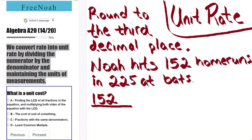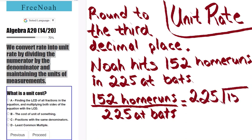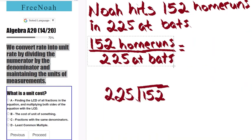We have Noah hits 152 home runs and 225 at-bats. The rate will be 152 home runs in the numerator and 225 at-bats in the denominator. So we have here a rate. Now, let's convert this by using simple long division into a unit rate.